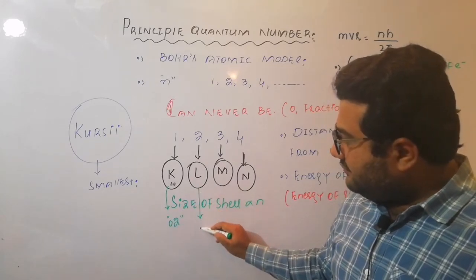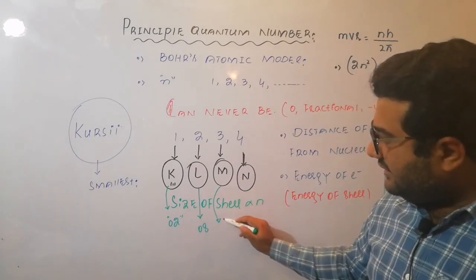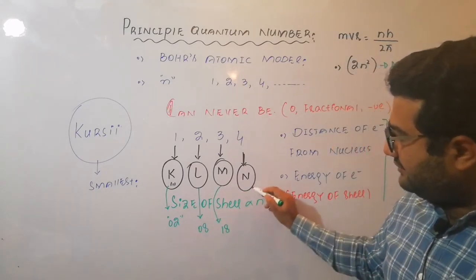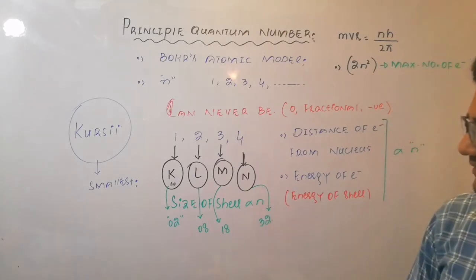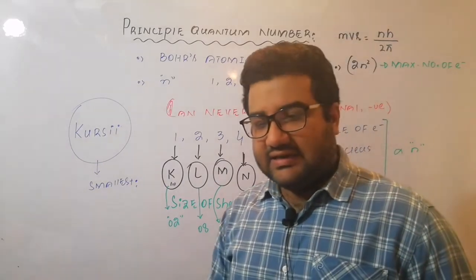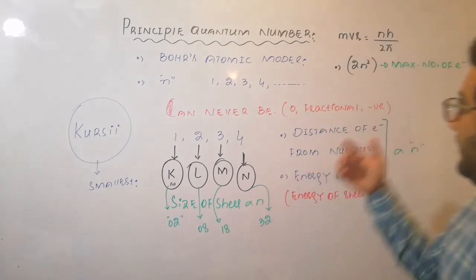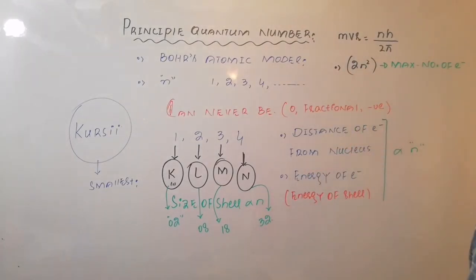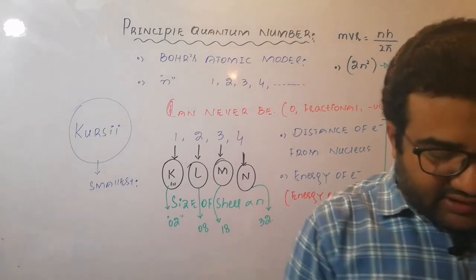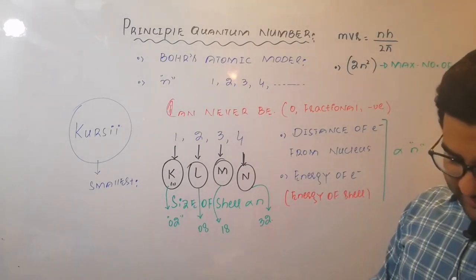L shell can have maximum of 8 electrons. M shell can have maximum of 18 electrons. N shell can have maximum of 32 electrons. And similarly the O shell, for which the value of n will be 5, can have maximum of 50 electrons, and so on. So these are some important information provided by the principal quantum number.